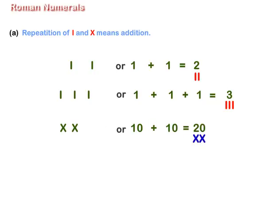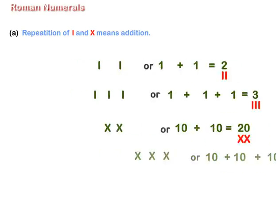In Roman, we write 20 as XX. XXX or 10 plus 10 plus 10 is equal to 30. In Roman, we write 30 as XXX.